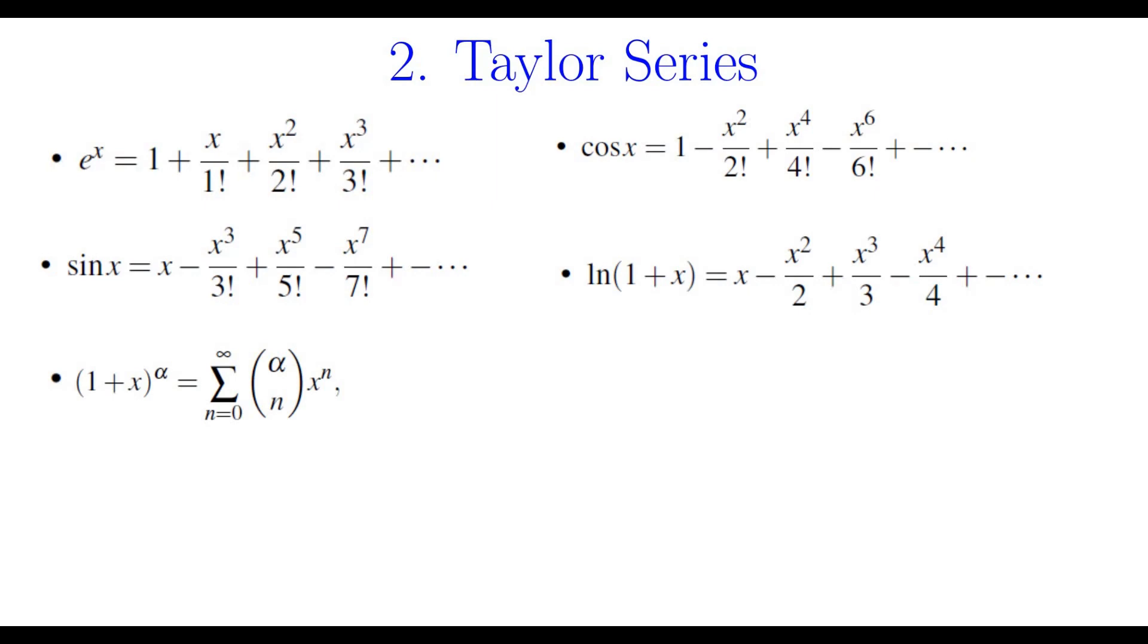The binomial formula might be the one that is less common. So it is 1 plus x to the power of alpha equals the sum of alpha choose n, x to the power of n. Keep in mind that this equality holds only when x is between negative 1 and 1 exclusive. Alpha choose n is defined as alpha choose 0 is 1, alpha choose n is alpha, alpha minus 1, all the way to alpha minus n plus 1 over n factorial.